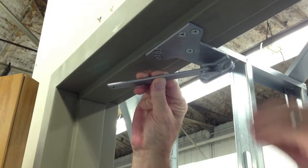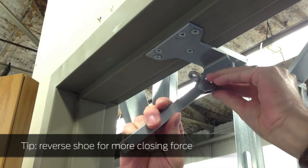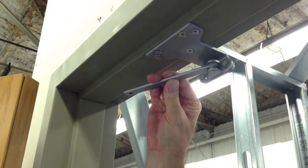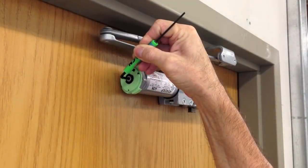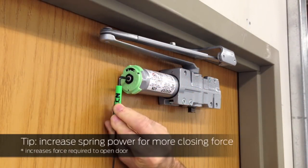If, after adjusting the latch speed, the door still does not latch properly, you can increase the closing force by reversing the shoe. If the door is still not latching, increasing the spring power can provide additional closing force. However, increasing the spring power will require more force to open the door.